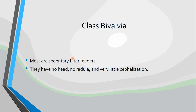Most bivalves are sedentary and they are filter feeders. Sedentary means they stay in one spot, anchored to the bottom and they do not move. Filter feeder means they actually filter their food right out of the water. They have no head, no radula, and very little cephalization. Cephalization means a collection of sensory organs in one end of the body — which for us would be our head. Our sense of hearing, equilibrium, smell, taste, and vision are all located in our head, and that is what cephalization is.